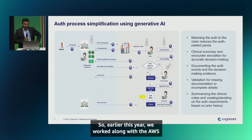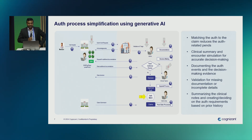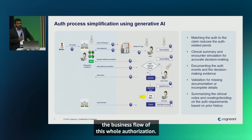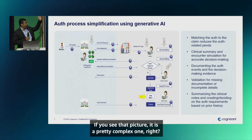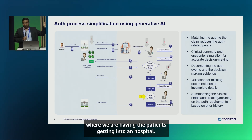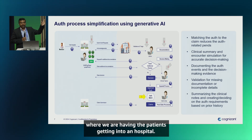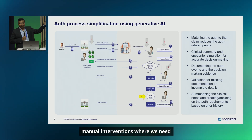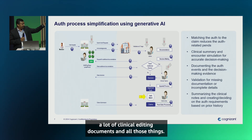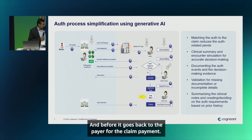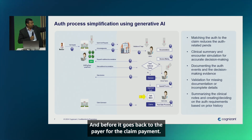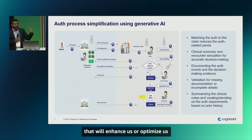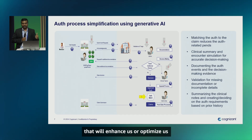Earlier this year, we worked with AWS and documented the end-to-end business flow of this whole authorization process. It is a pretty complex one — right from the place of service where patients are getting into a hospital, going through multiple back-and-forth manual interventions requiring a lot of clinical editing documents, before it goes back to the payer for claim payment. We identified the areas where we can leverage Gen AI to enhance and optimize the whole business process.